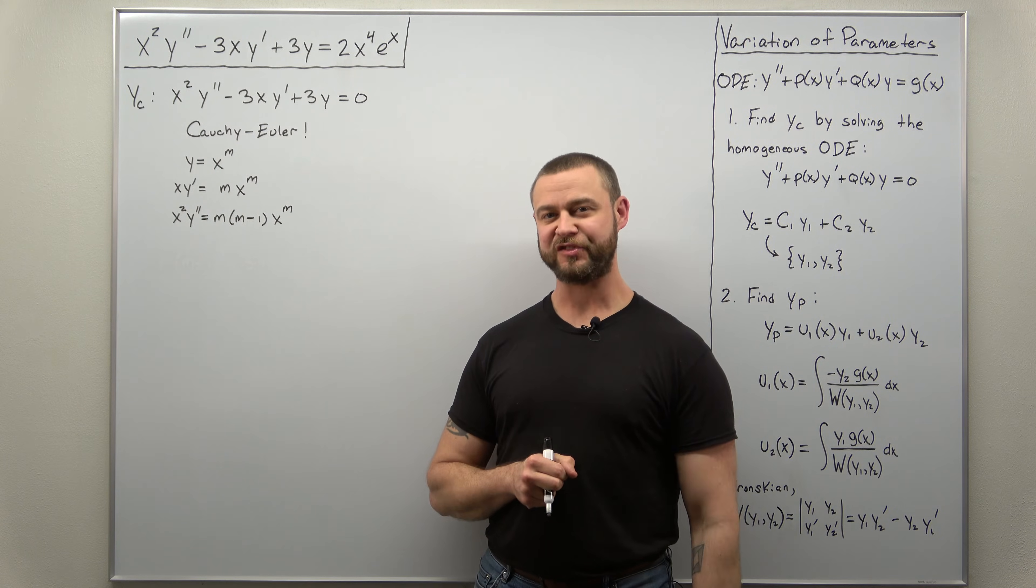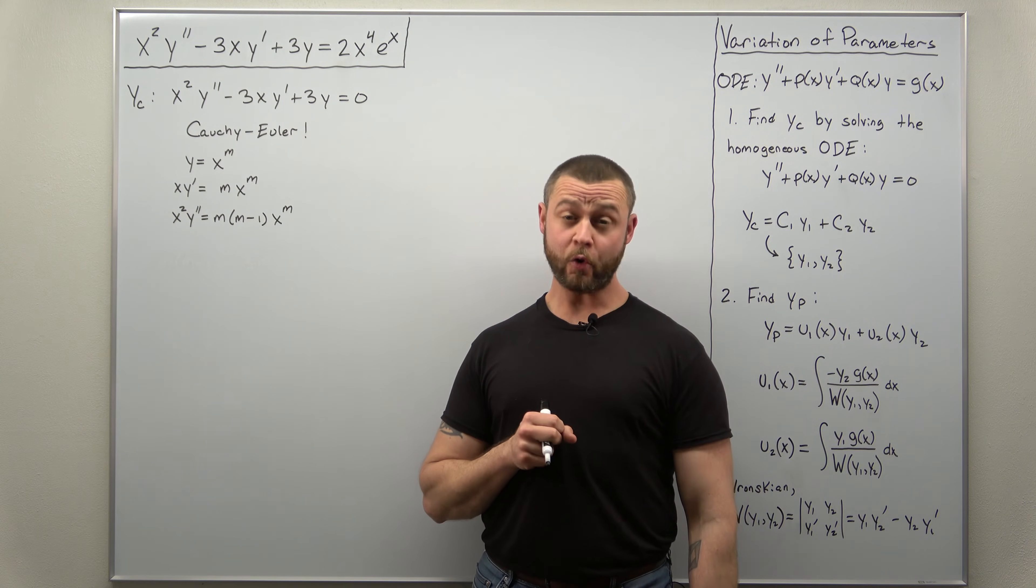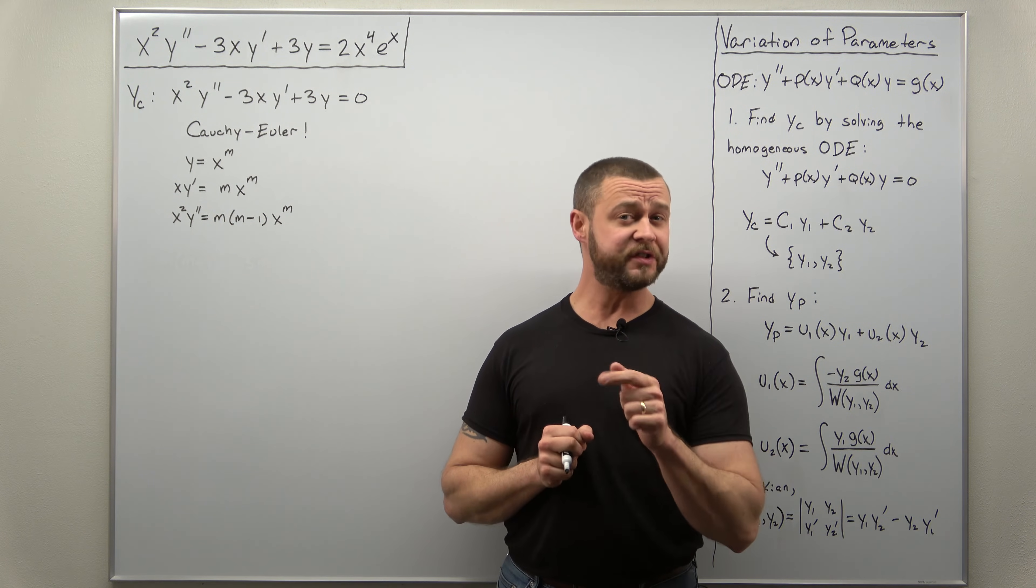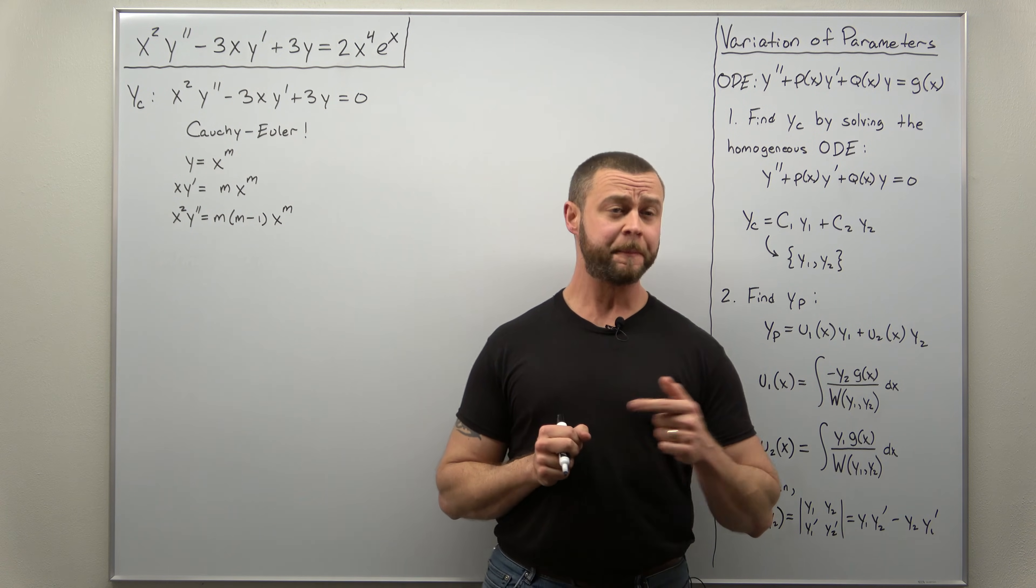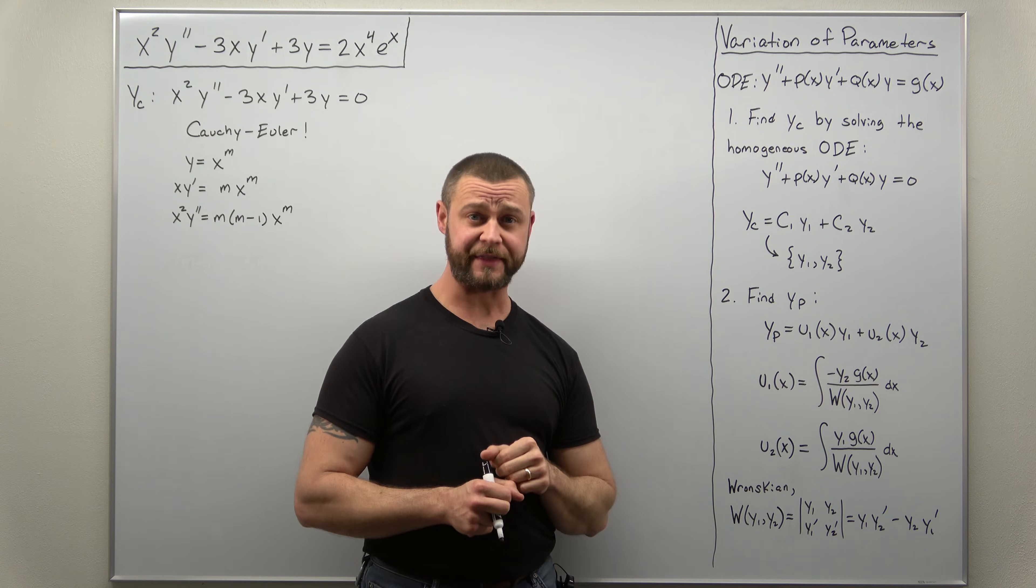Greetings, fellow mathematicians. We're going to take a look at a non-homogeneous Cauchy-Euler equation. We're going to find the particular solution using the method of variation of parameters, and we have the steps for that over on the side in case it's been a while since you've looked at that.